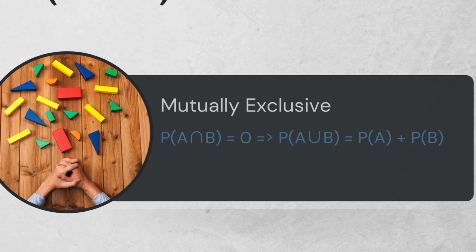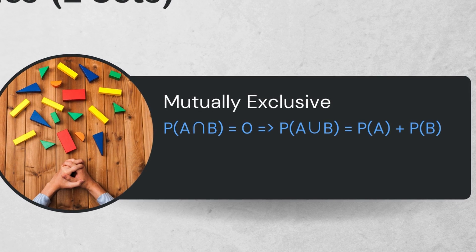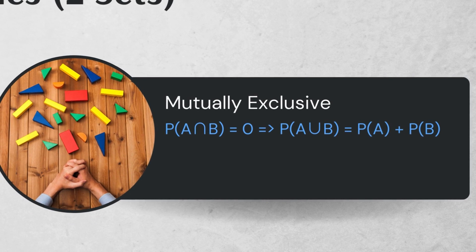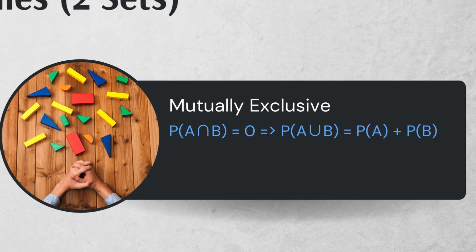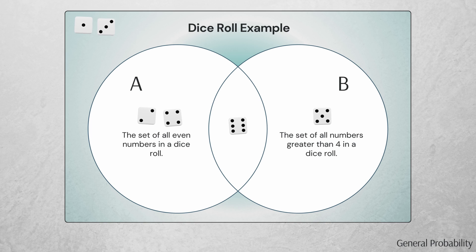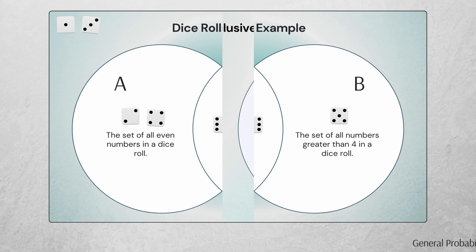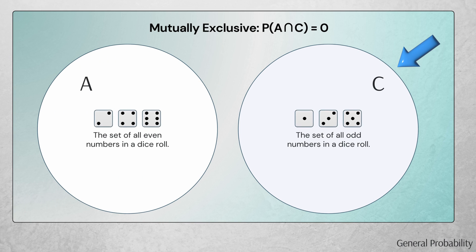Two events are mutually exclusive if they share no common elements. In other words, for two events A and B, if the probability of A intersection B is 0, then the two events are mutually exclusive. Going back to the dice roll example, A and B are not mutually exclusive because they share the common element 6. If we introduce a new event C defined as the set of all odd numbers in a dice roll, then A and C are indeed mutually exclusive.